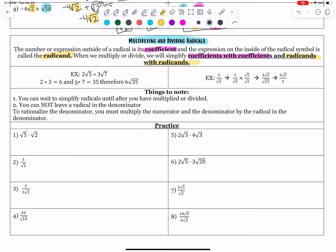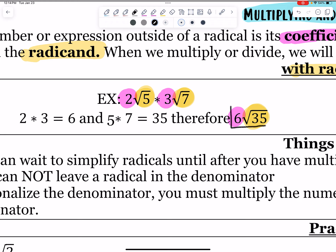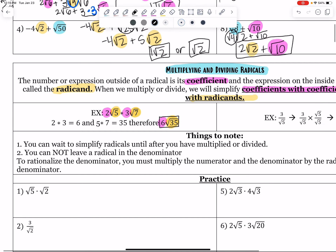In class we talked about how you have your outdoorsy people that hang out together and your indoorsy people. That's a fancy way to say coefficients with coefficients and radicands with radicands. For the example 2 root 5 times 3 root 7, my radicands are 5 and 7, my coefficients are 2 and 3. When you multiply: 2 times 3 is 6, and root 5 times root 7 is root 35. That is fully simplified — no perfect square factors of 35.